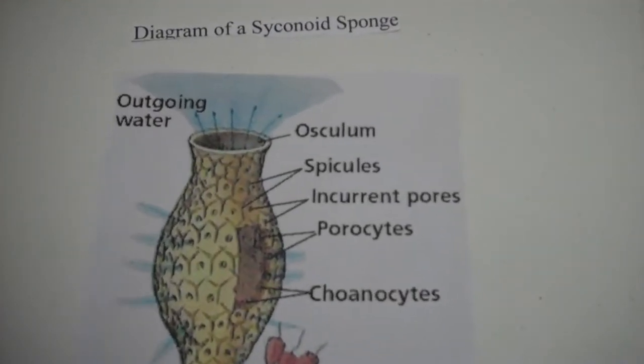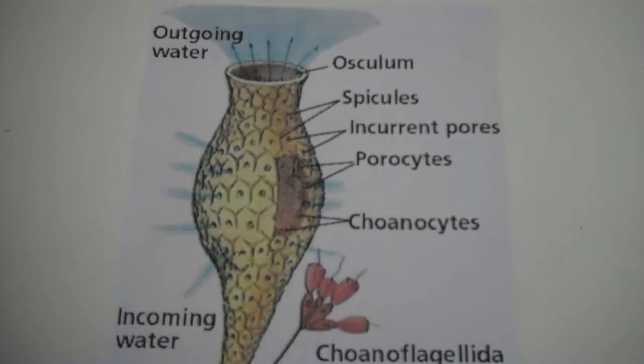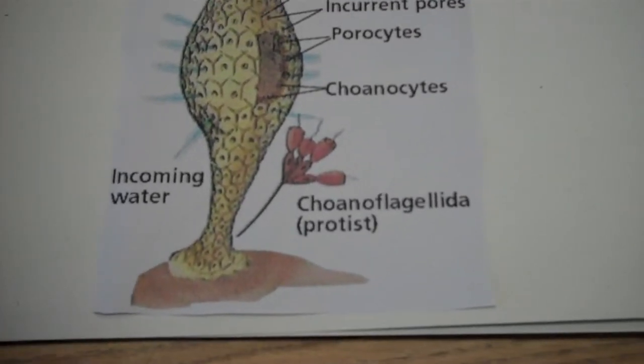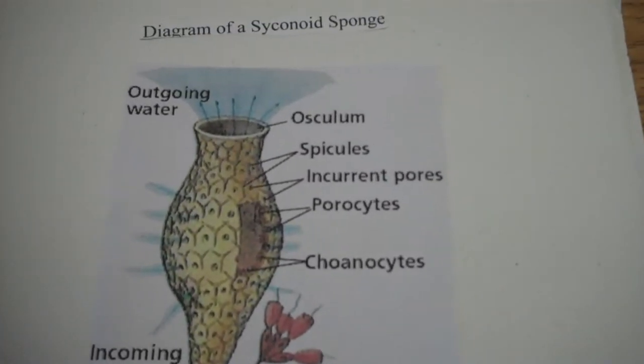This is a diagram of a syconoid sponge. Syconoid sponges only have one osculum. The sponge gets rid of waste through the osculum. This is part of a syconoid sponge's digestive system.